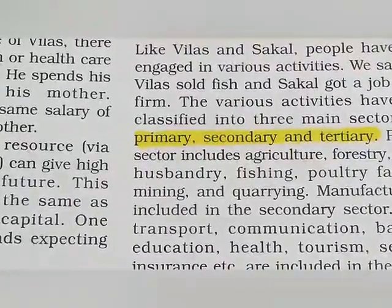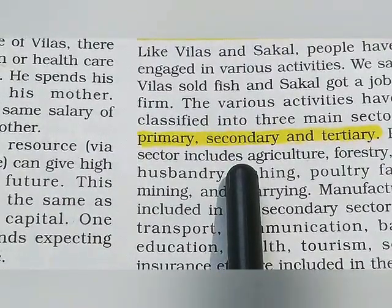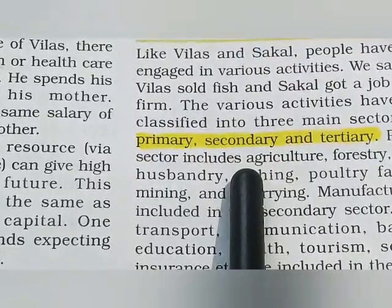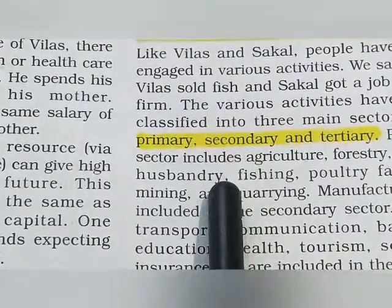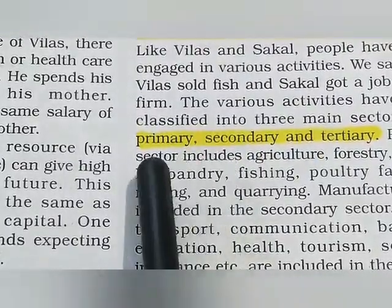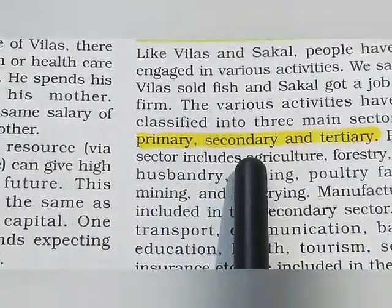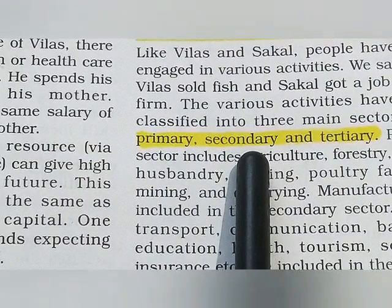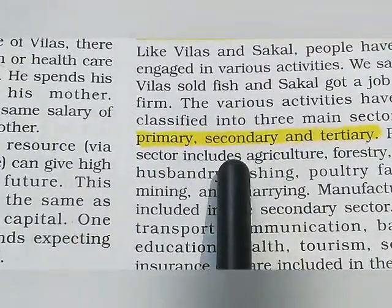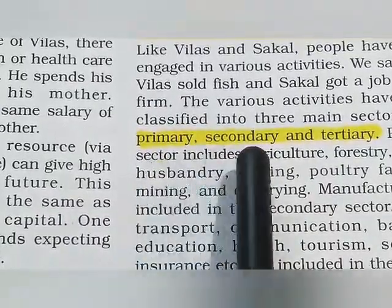What is secondary sector? It basically modifies whatever things we got from the primary sector. For example, if we get cotton from the primary sector, the secondary sector converts cotton into yarn, or makes cotton clothes. Things made from cotton are not made in the primary sector — there we obtained it as a raw material. In the secondary sector, which is also called the manufacturing sector, we convert it into cotton clothes or yarn. This process is done in a factory or industry — raw material goes through the manufacturing process.